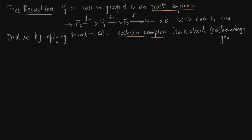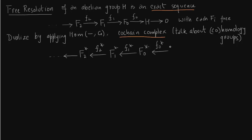We have seen before that if you dualize something, it is not necessary that exactness is preserved. I put stars on it so that you know we are talking about the co-chain complex, or a dualized complex. Since this is a complex and it is not exact because dualization does not necessarily preserve exactness, we can talk about the cohomology groups. Let us give the notation of the cohomology groups of such a co-chain complex — kernel of f*(n+1) modulo image.